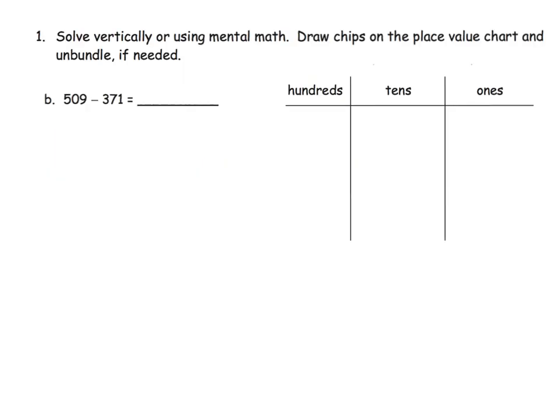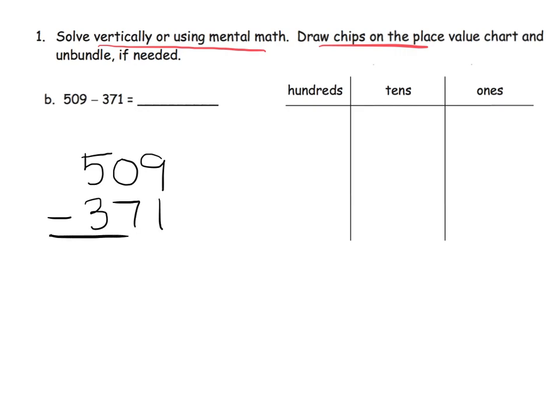It says to solve vertically or using a mental math method, and to draw the place value chart and use the number disks. I'll start with the vertical method. We've got 509 minus 371, and notice I lined up all my numbers nice and neat.